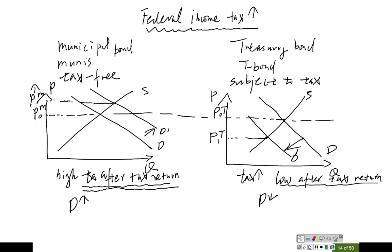So price of this bond, treasury bond, drops. Price for this market, T-bond, will go up. And then we know interest rate has a negative relation with the bond price.